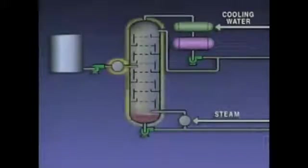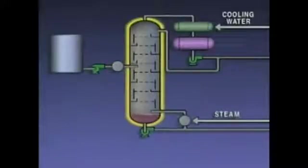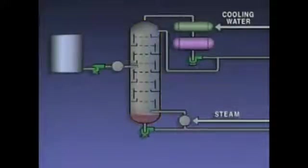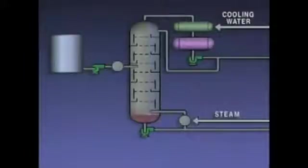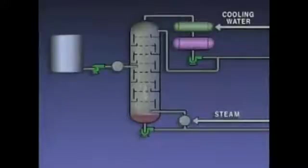The pressure in the tower is lower than the pressure in the preheater, so when the feed enters the tower, it starts to boil. The vapors from the boiling liquid, which primarily contain the lighter components in the feed, rise in the tower. The remaining liquid, which consists primarily of the heavier components in the feed, moves down the tower and collects at the bottom.